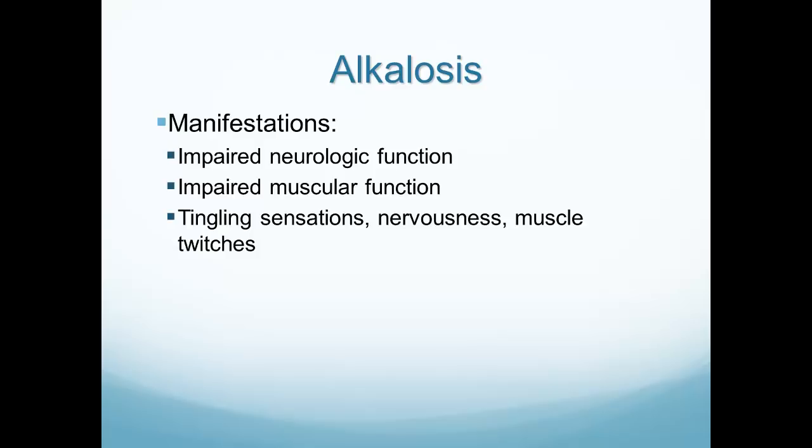Manifestations of alkalosis include impaired neurologic and muscular function. We can have sensations such as nervousness, muscle twitches, and tingling — all signs of neuromuscular irritability occurring in our patient. Once again, we're seeing the results of an abnormal pH affecting the body's tissues in an abnormal way and leading to poor outcomes.